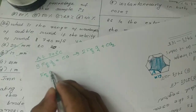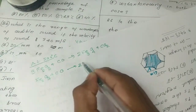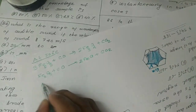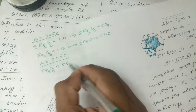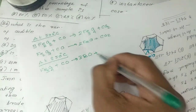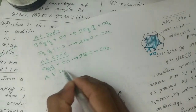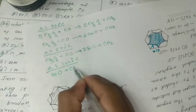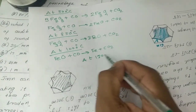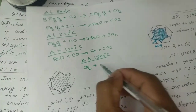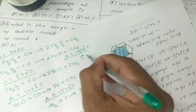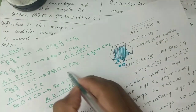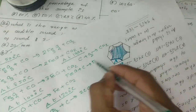Fe2O3 plus CO gives 2FeO plus CO2. At around 900 degrees Celsius: Fe3O4 plus CO gives 3FeO plus CO2. At 1000 degrees Celsius: FeO plus CO gives Fe plus CO2. At 1300 degrees Celsius: CO2 plus C gives 2CO. At 1900 degrees Celsius: C plus O2 gives CO2. Then: FeO plus C gives Fe plus CO.